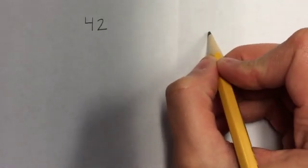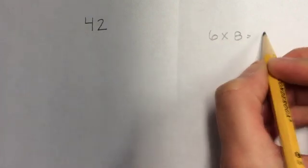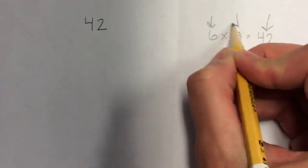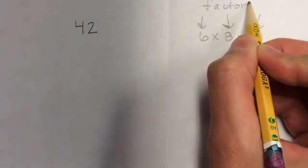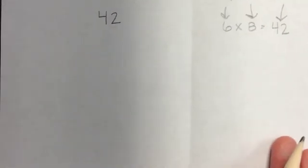First, just as a reminder, factors are two numbers that you multiply together to get the product. So this is the product, and these are the factors. Sometimes we call these factor pairs when we list them together like this, but for our sake we're just going to write it as a list.